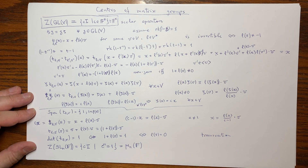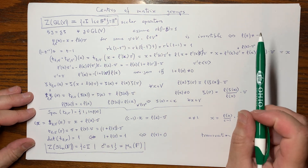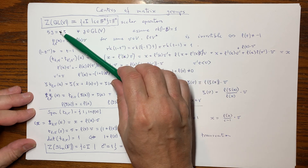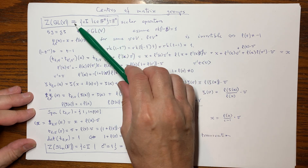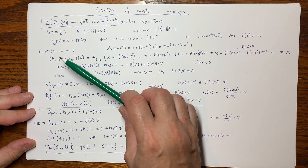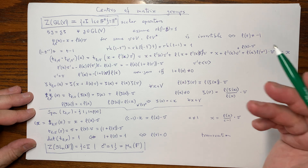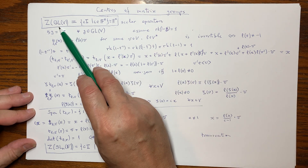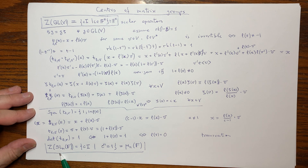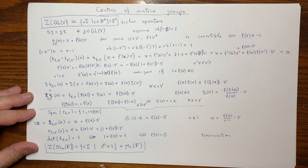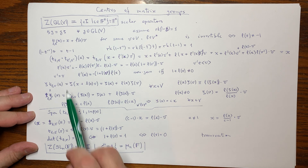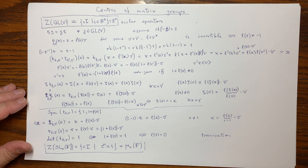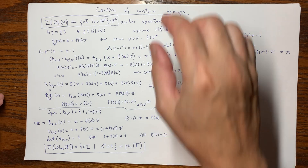A quick conclusion: if the size is bigger than 1, the center will be a proper and quite small subgroup inside the general linear group. So for more than one-dimensional vector spaces, the general linear group is non-abelian, and so is the special linear group. Non-abelianness can already be seen at the level of these transvections. See you later.